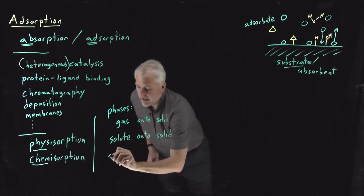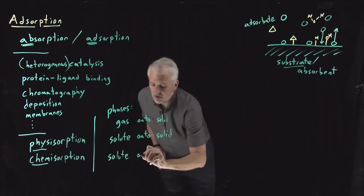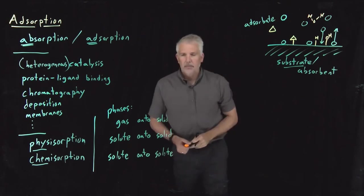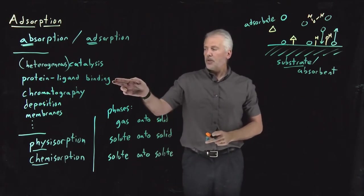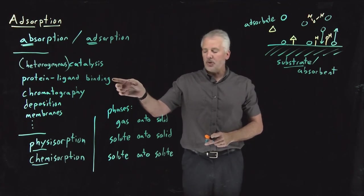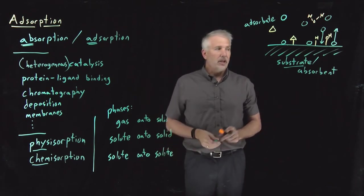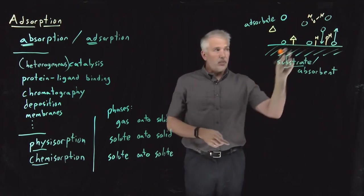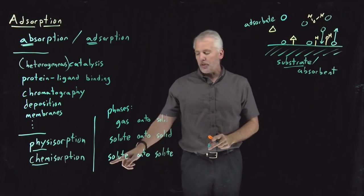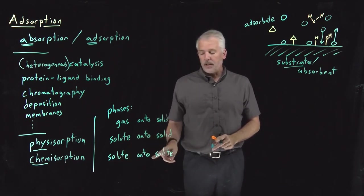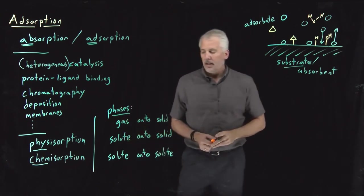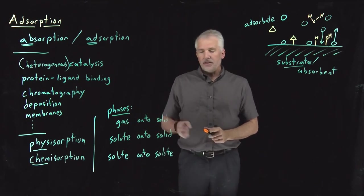We can even have dissolved solute species adsorbing onto other solute species within the same solution. That's probably more like what's going on in most cases of enzymatic catalysis, where the substrate to which the ligand binds is itself a solute in an aqueous solution. We've got a large protein in solution, a small ligand molecule binds to that enzyme, and when it desorbs it goes back into solution. So there's a big variety of different phases that both the adsorbate and the substrate can be in.